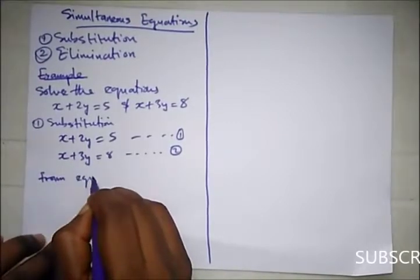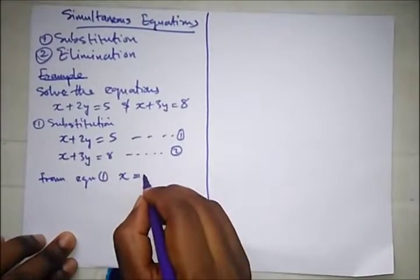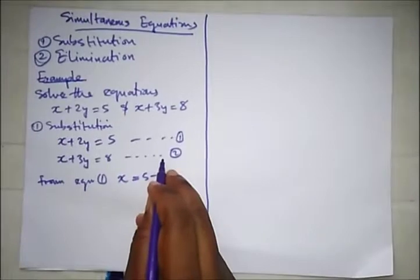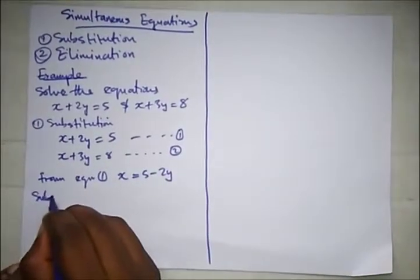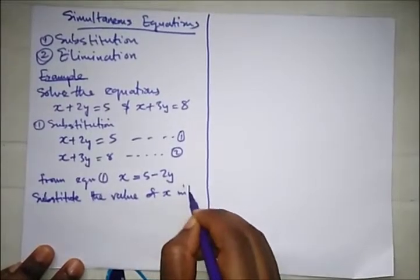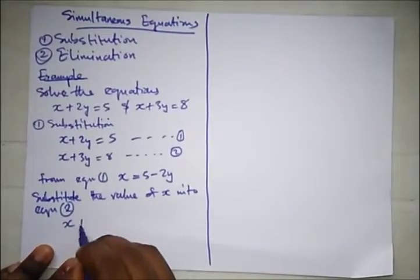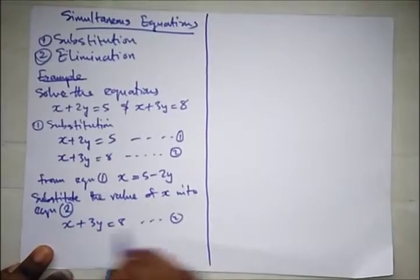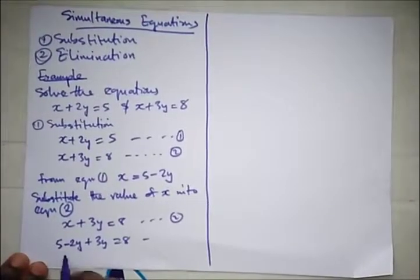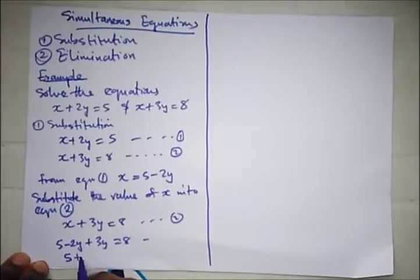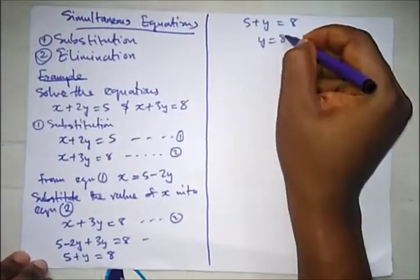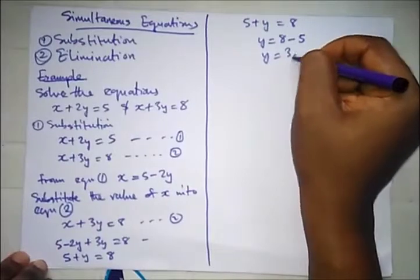So from equation 1, x is equal to, bringing 2y to the other side, we have 5 - 2y. Then now we'll substitute the value of x into equation 2 and not equation 1. So this is equation 2. Let's substitute the value of x here. So this will be 5 - 2y + 3y = 8. So here we have 5 - 2y + 3y is +y = 8. So from here we have 5 + y = 8, where y will be equal to 8 - 5, and y is equal to 3.